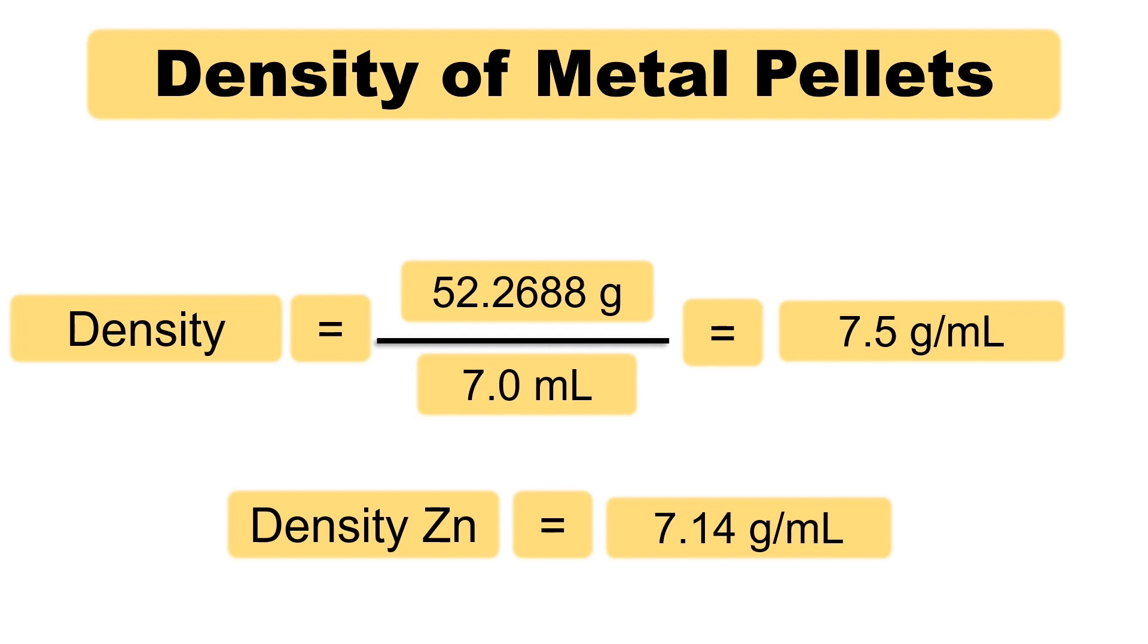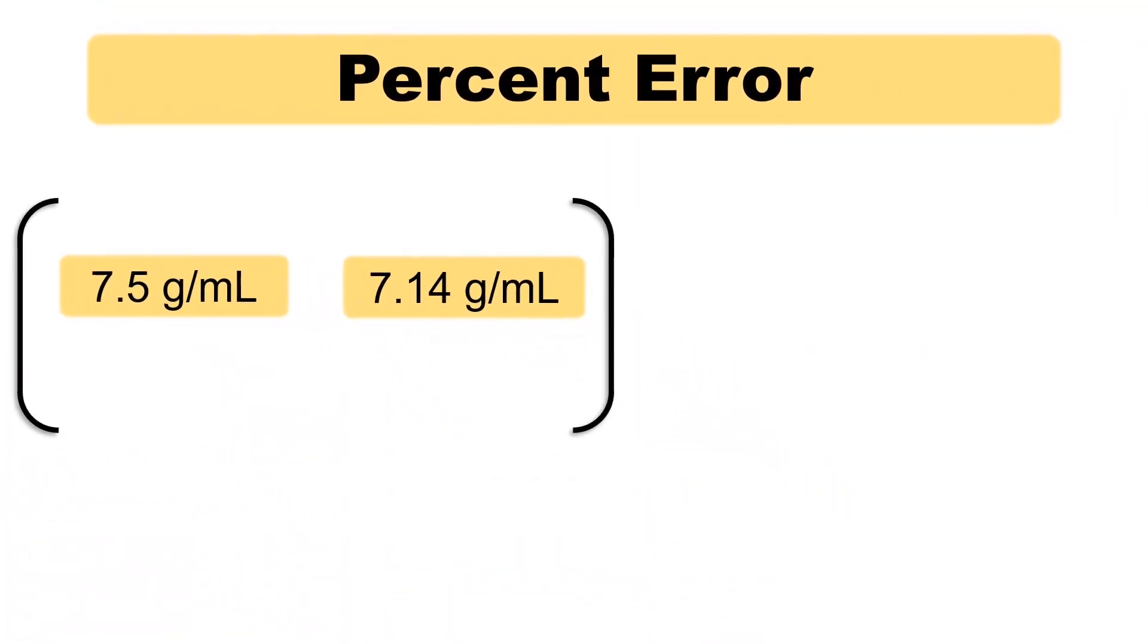Percent error is simply a measurement of how close we are to the accepted value. Here's the equation. Take the absolute value of the difference in your experimental value and the accepted value. Then divide by the accepted value. Multiply this ratio by 100 to get the percent error.